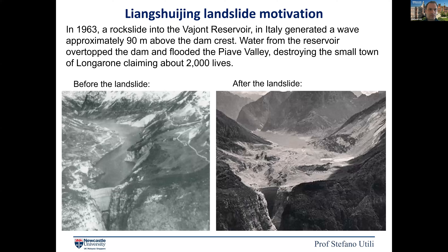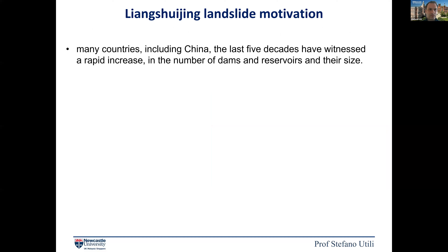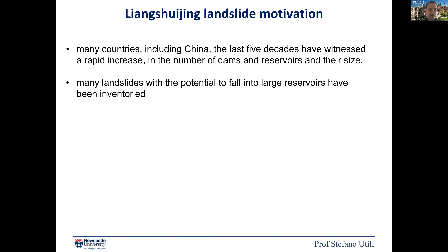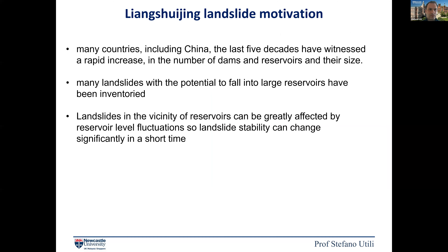In terms of motivation, in the last five decades there has been a rapid increase in the number of dams and reservoirs worldwide, for two main reasons: irrigation and hydropower. The size of dams has also increased massively — the Three Gorges Dam is the largest in the world, producing the equivalent of 18 nuclear power stations. Many landslides now have the potential to fall into these larger reservoirs, raising the question of how large a wave — a mini or not-so-mini tsunami — could be induced.